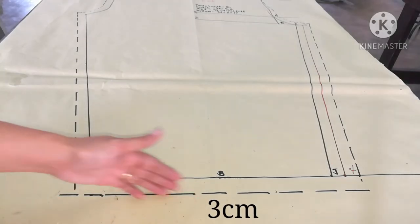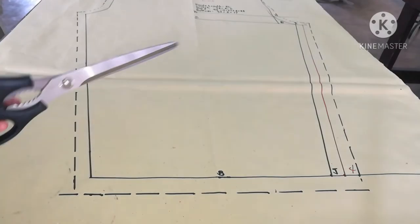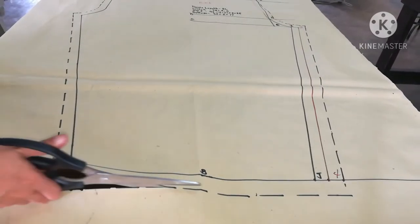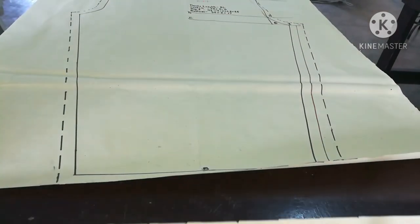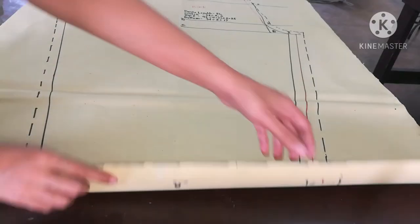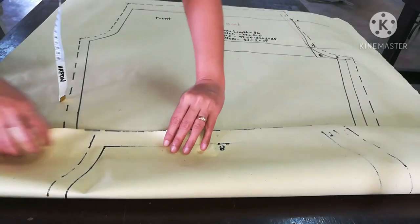Allowance for the bottom is 3 centimeters from that point. Now let's get the pattern. Fold the hemline or bottom allowance before cutting the inseam.